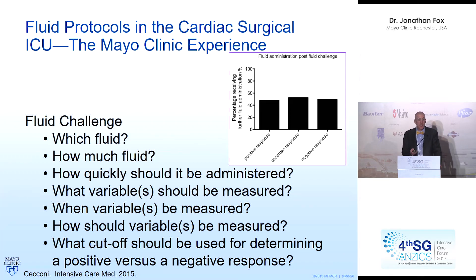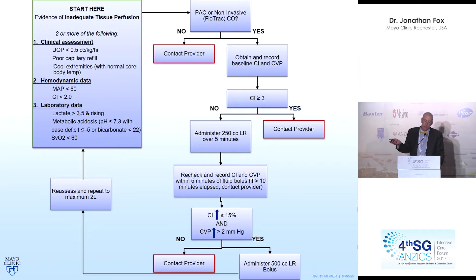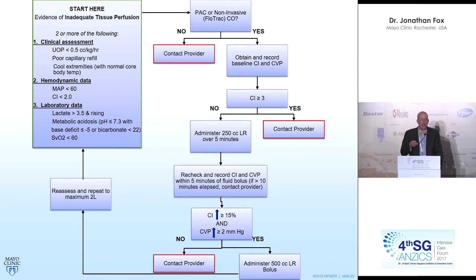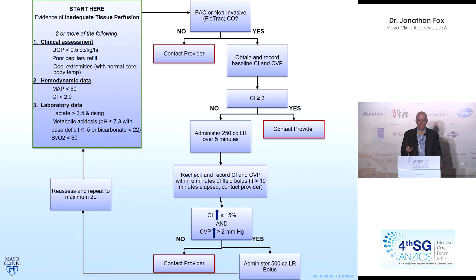There has to be an educational component for our practitioners. Ultimately, what we settled on is a protocol that starts with: is there evidence of tissue hypoperfusion on the basis of a combination of clinical, laboratory, and hemodynamic data? Next, does that patient have some means of assessing stroke volume and thus cardiac output? Obtain a baseline set of measurements. From those, if the patient has tissue hypoperfusion, might there be other reasons than volume—could it be a problem of vascular resistance? And we continue down the decision tree.